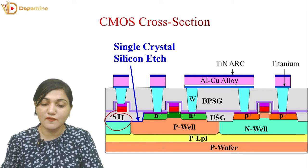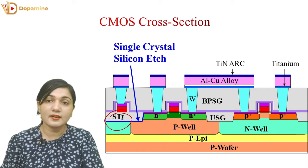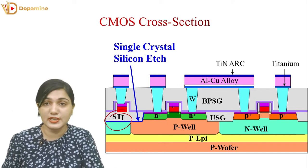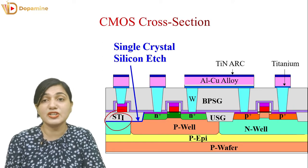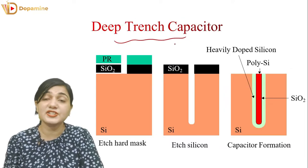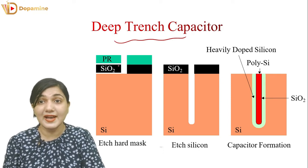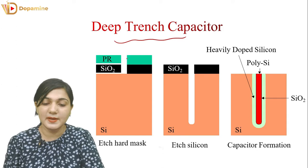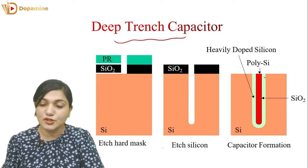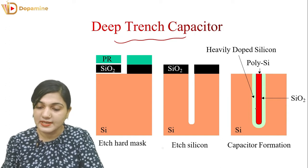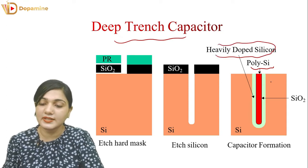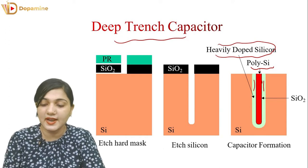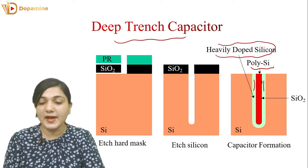There is a formation of shallow trench isolation, from which one device or another device is isolated and is not shorted. Shallow trench isolation is very important in IC fabrication — every IC uses shallow trench isolation. For a deep trench capacitor, we make a window and create a shallow trench. We fill the trench with heavily doped silicon and make a poly-silicon layer. Poly-silicon acts as a dielectric and heavily doped silicon acts as a conductor, forming a capacitor.